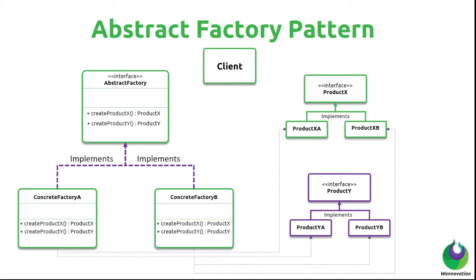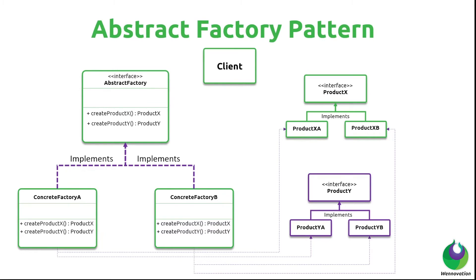The client code always uses the abstract factory to call the factory methods and create these concrete products, only ever caring about the interfaces Product X and Product Y. This way we can let the client create as many products as needed and keep adding more in the future. Our design will be able to support families of related products as our software grows, and the client never has to see the details of the concrete implementations.